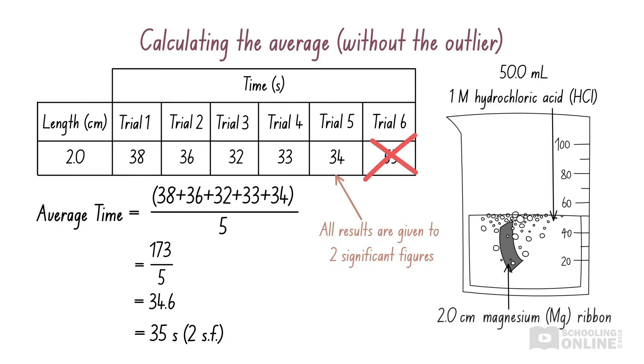The values that were too large cancelled out the effects of the values that were too small, giving us a reliable final answer.